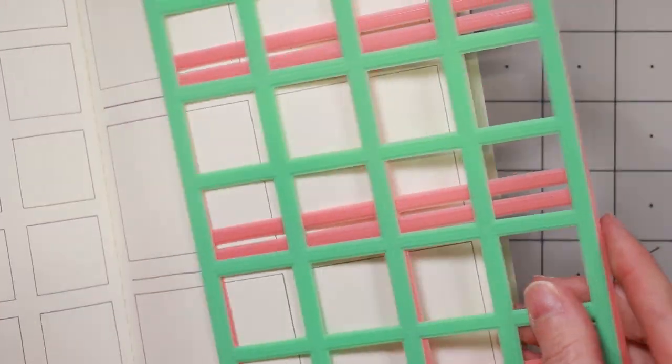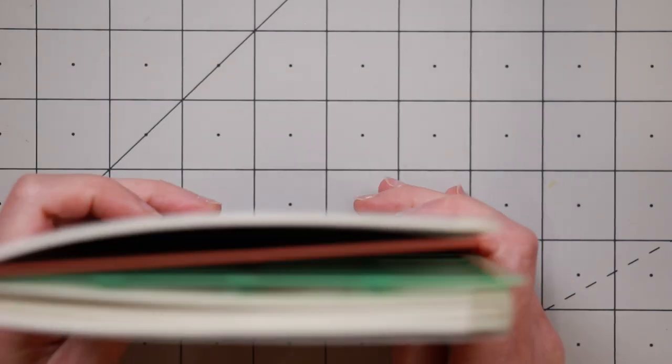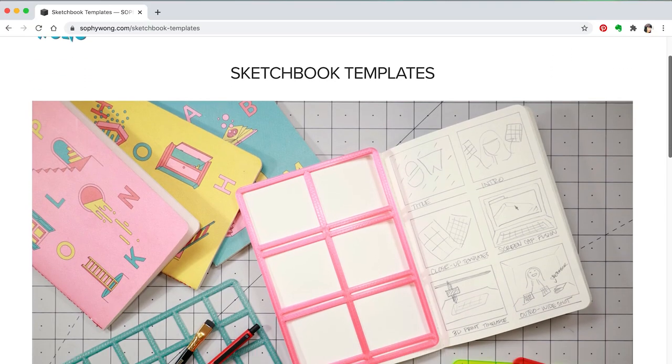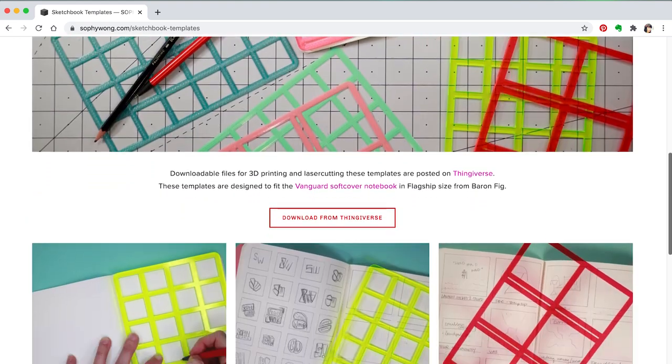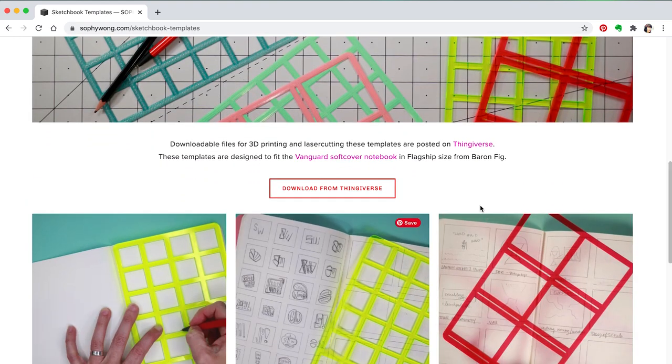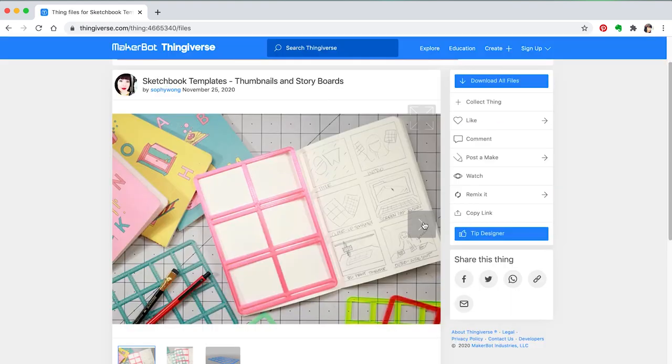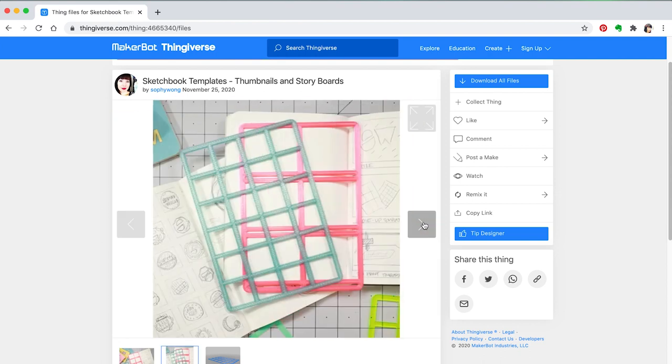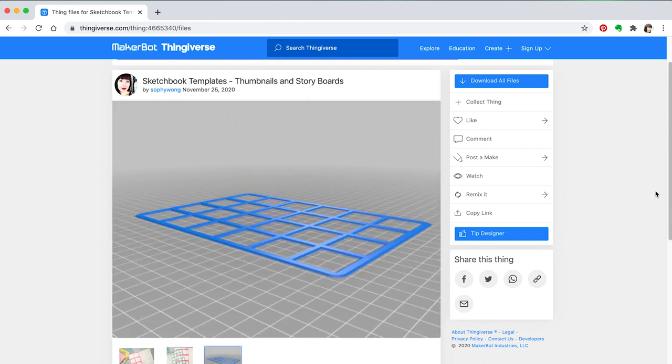They're a bit flimsier though, and they're a little more fiddly to use, so I definitely prefer the rigidity of the 2mm version. But I'm putting all the files for all the versions up on my website and on Thingiverse, so you can make whichever version you like. I'll also post a link to the sketchbooks that I designed these templates to fit into.